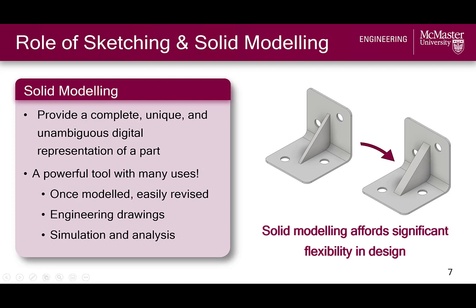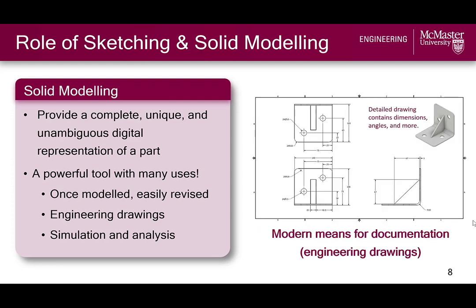If we go back to our L-bracket example, we could easily change the rib thickness by updating a single number without needing to redo the entire model, which is especially convenient in the iterative design process. Solid models can also be used as a modern means for design documentation in terms of generating engineering drawings. These drawings contain all the necessary dimensions required to manufacture a part, and they're therefore crucial deliverables of the design process.